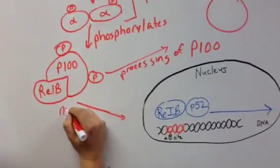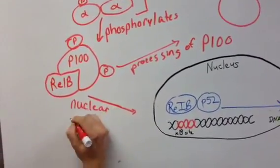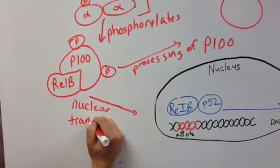This heterodimer subsequently translocates to the nucleus to activate target genes regulated by KB sites.